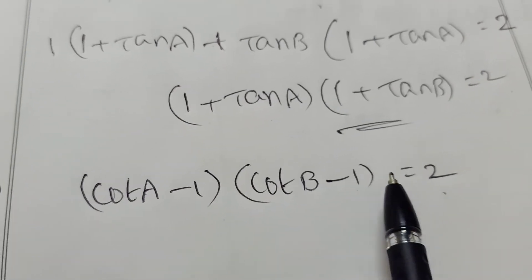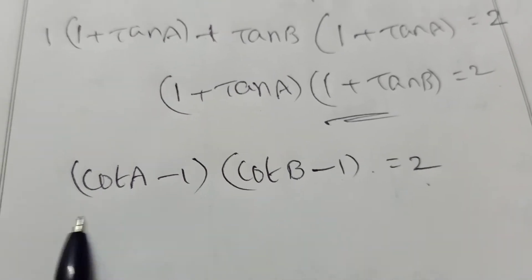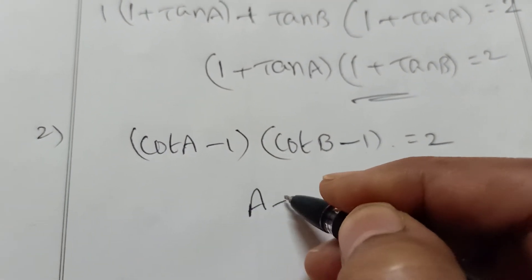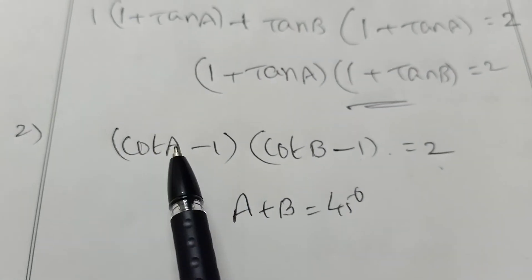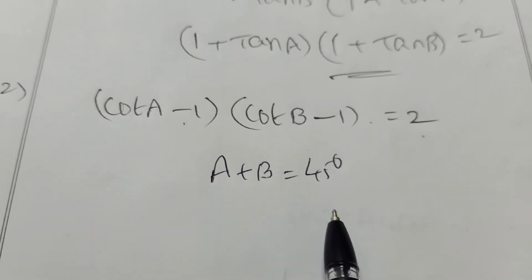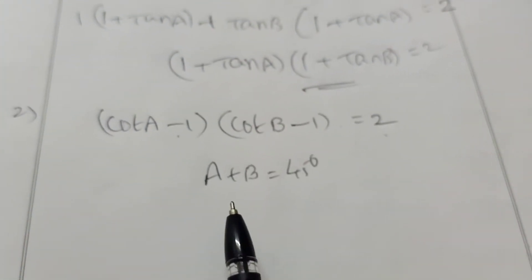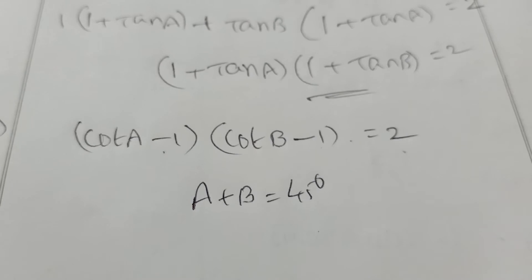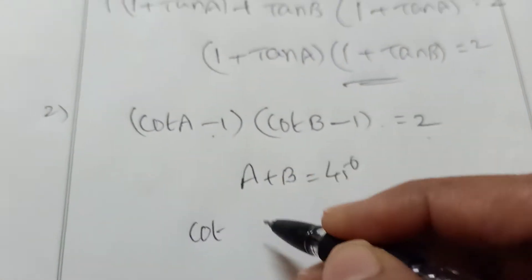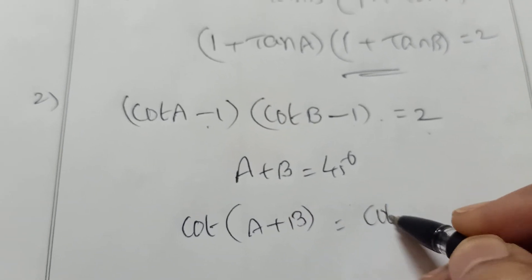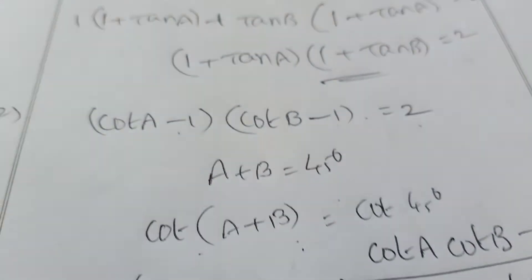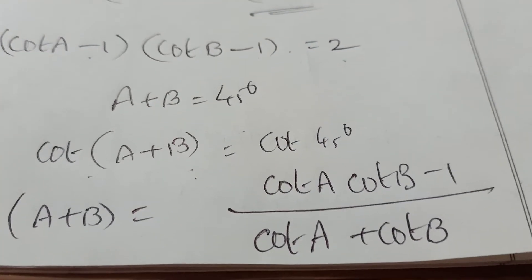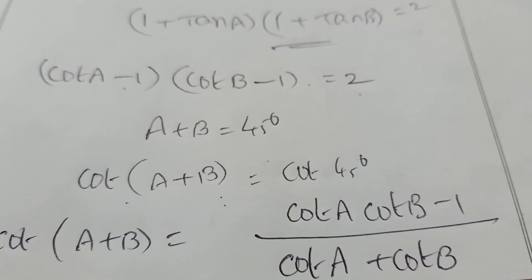Next question: prove that (cot A minus 1)(cot B minus 1) equals 2, given A plus B equals 45 degrees. Since the question is in terms of cot, take cot on both sides: cot of A plus B equals cot 45 degrees, which is 1. Recall the cot formula: cot of A plus B equals cot A cot B minus 1 divided by cot A plus cot B.